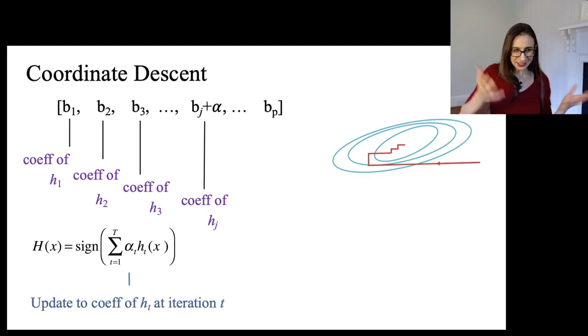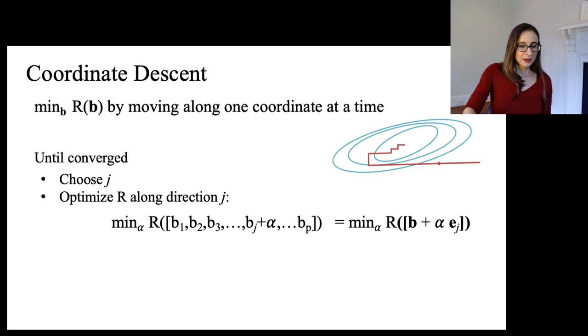But another way to write it is just, you can just write it as the sum over all iterations. And then you add up the updates to the coefficients that you made for each weak classifier. So alpha T is the update to the coefficient of the weak classifier that you've got at iteration T.